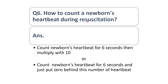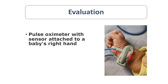A viva question: how to count newborn's heartbeat during resuscitation? Count for six seconds then multiply by 10, or just put a zero behind the count. The pulse oximeter sensor should be attached to the right hand at the hypothenar eminence to measure SpO2 of the right hand.